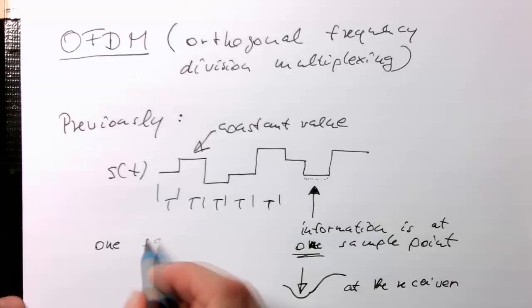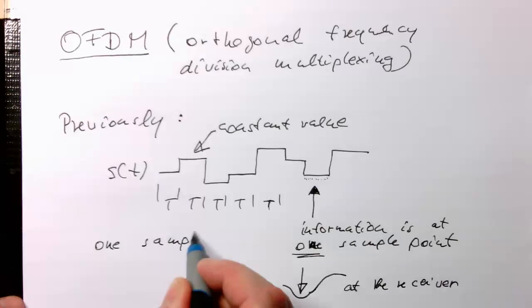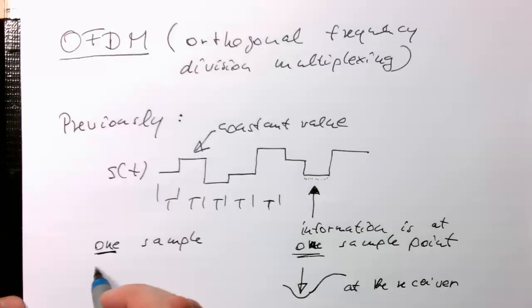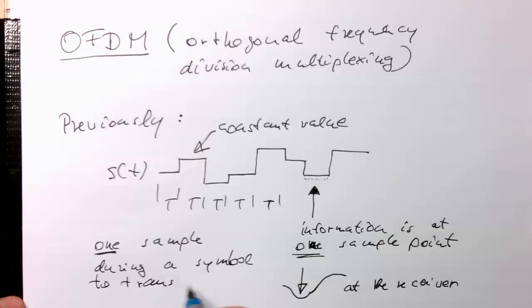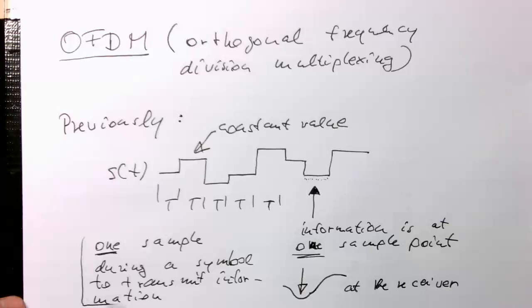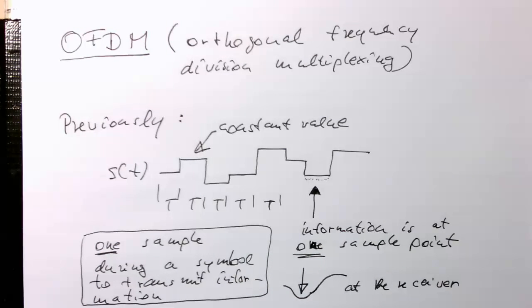So we use only one sample per symbol duration. So just write this here once more. So only one sample during a symbol to transmit information. This is obviously very inefficient.